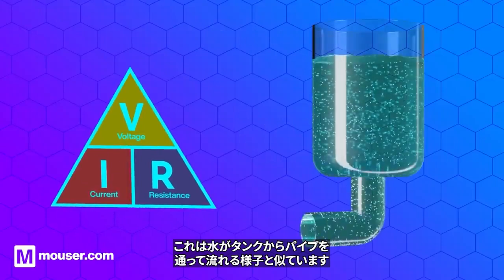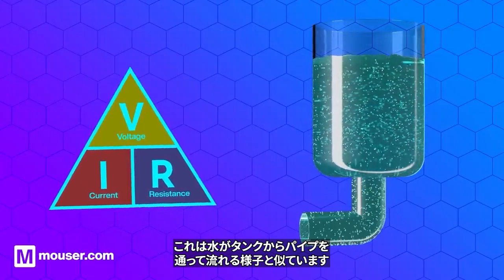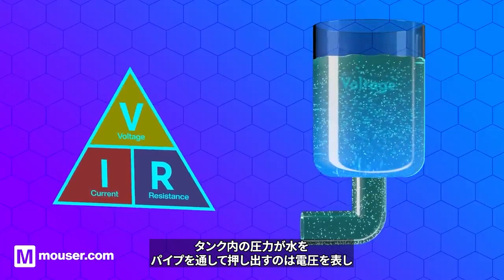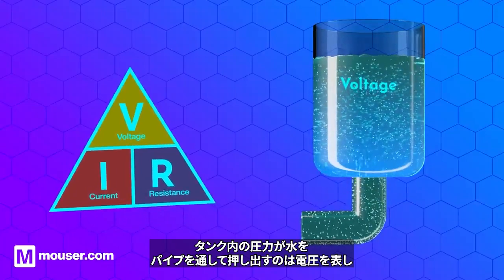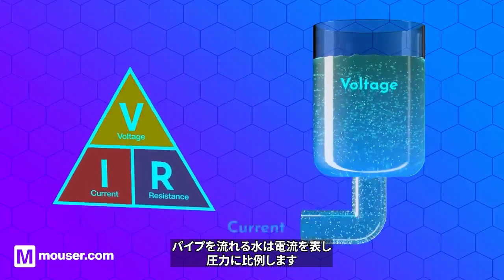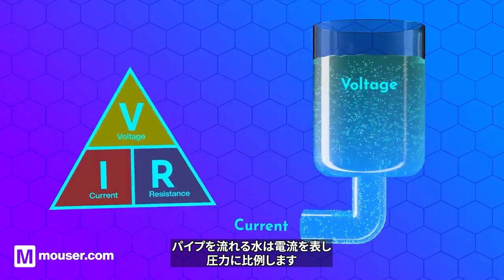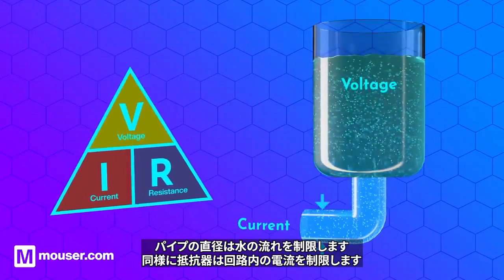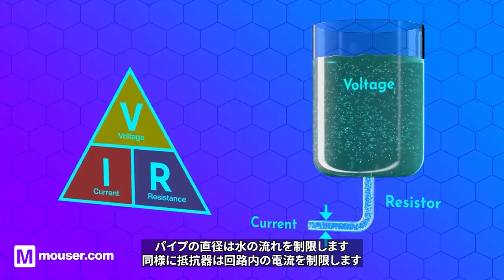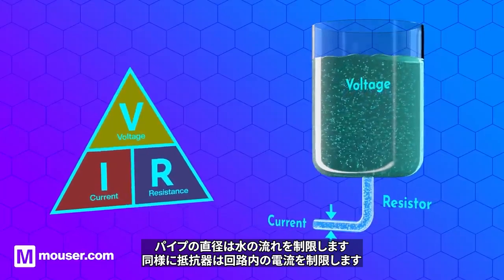You can think of this like water flowing from a tank through a pipe. The pressure in the tank forcing the water through the pipe represents the voltage. The water flowing through the pipe represents current and is proportional to the pressure. The diameter of the pipe limits the flow of water the same way a resistor limits the current in a circuit.